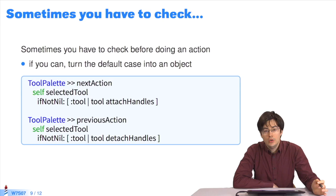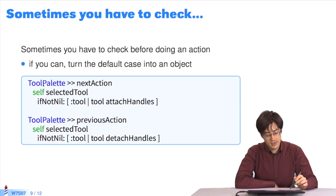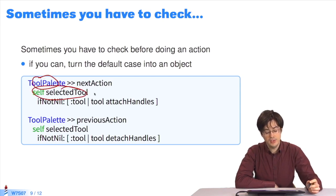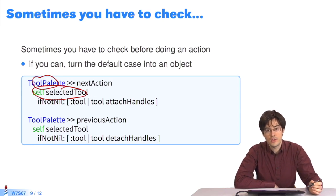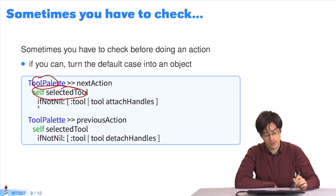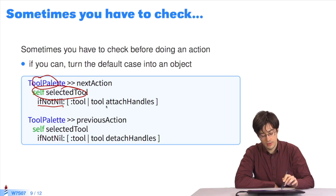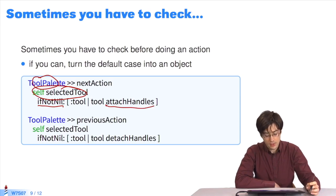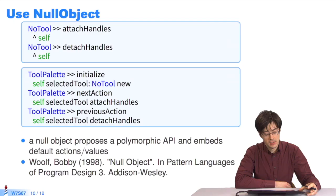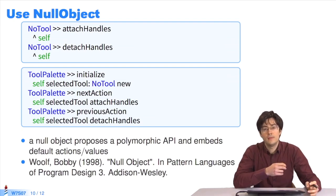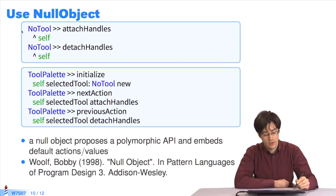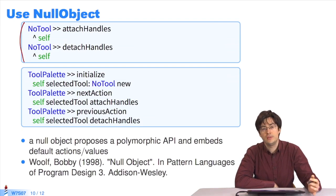Sometimes we come across cases in which it's necessary to check whether or not we need to respond, as we see in this example. Here we have a tool palette. If a tool is selected, we can respond. But if none is selected, we prefer not to act. Look at the selectedTool function — if it returns nil, no tools are selected, so no action is required. If selectedTool returns something, we will ask it to perform an action. A good way of replacing this is to use the null object pattern. Instead of having two cases — one with tools and one without — we have one case in which one of our tools does nothing. This tool will be selected by default. We create a tool that does nothing when asked to perform actions. Instead of not selecting anything, we enable a tool that does nothing.